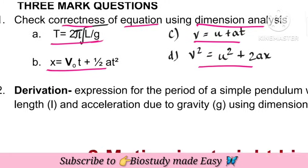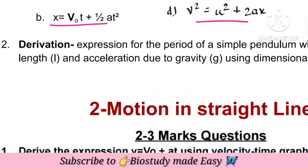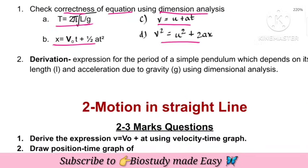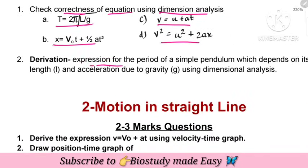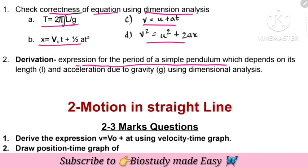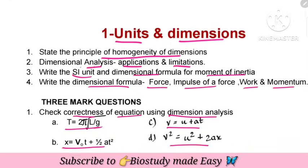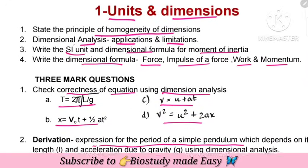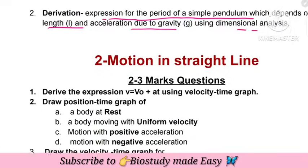Using dimensional analysis — next, a 3-mark derivation: expression for the period of a simple pendulum that depends on its length and acceleration due to gravity using dimensional analysis. And a 5-mark question on units and dimensions.